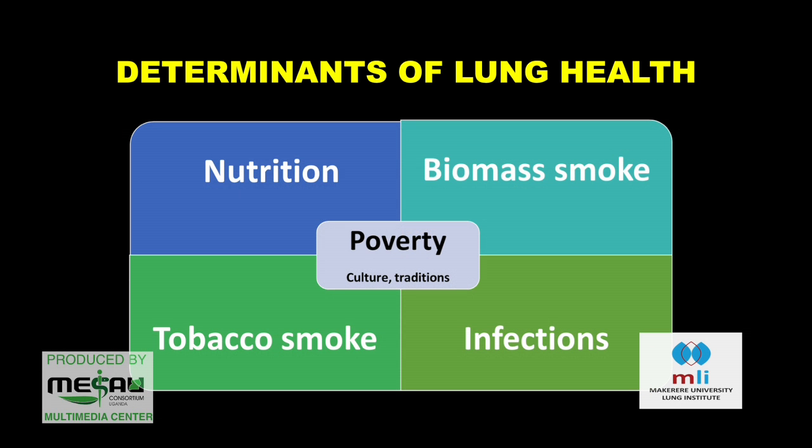Now I go to the determinants. I divided them into the major form — not the only determinants, but the major ones where we can think through research or practice to intervene. We have nutrition — not childhood nutrition, but maternal nutrition. We have biomass smoke; about 99% of our households use biomass smoke for cooking, lighting, or heating. We also have tobacco smoke and infections. But underlying all these issues, I think, is poverty.